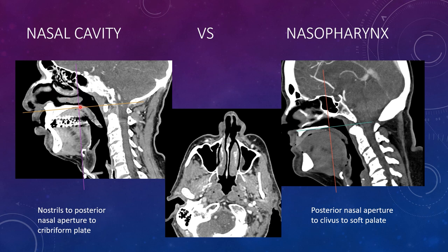Posterior to this, from the edge of the hard palate to the clivus, is the nasopharynx. And here's the nasopharyngeal lymphoid tissue lining anterior to the clivus. Here it is in landmarks — this area posterior to these lines is the nasopharynx. On the axial view, you see the classic components.